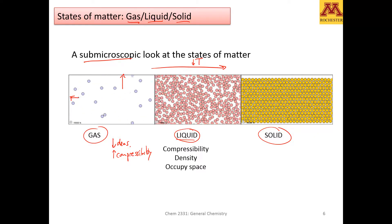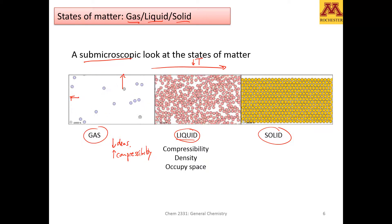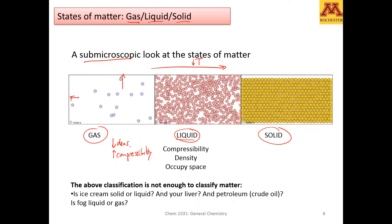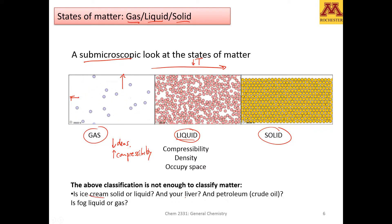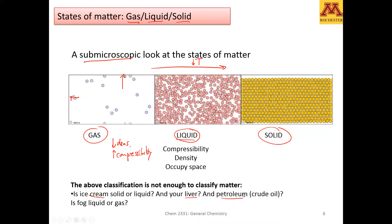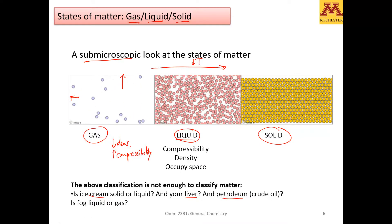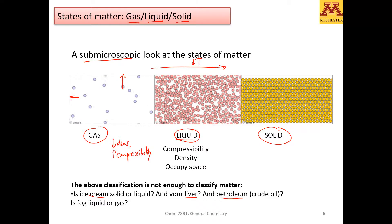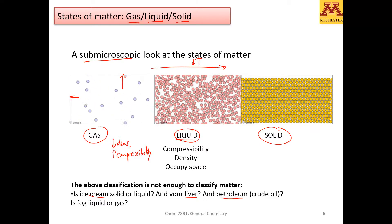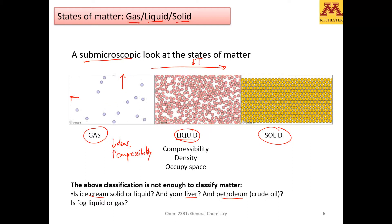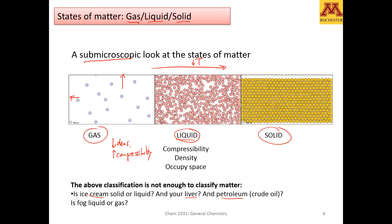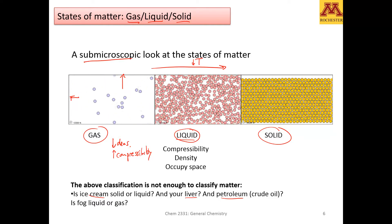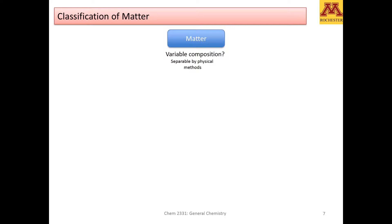This is the classification of matter by state, however it may not be enough. When we talk about common objects such as ice cream, your liver, or petroleum, some of these objects do not simply classify as gas, liquid, or solid. So the state of matter, while it still holds true, may not be good enough for us to understand what is going on at the intermolecular or atomic level. This is why we need to move to what we call the classification of matter.